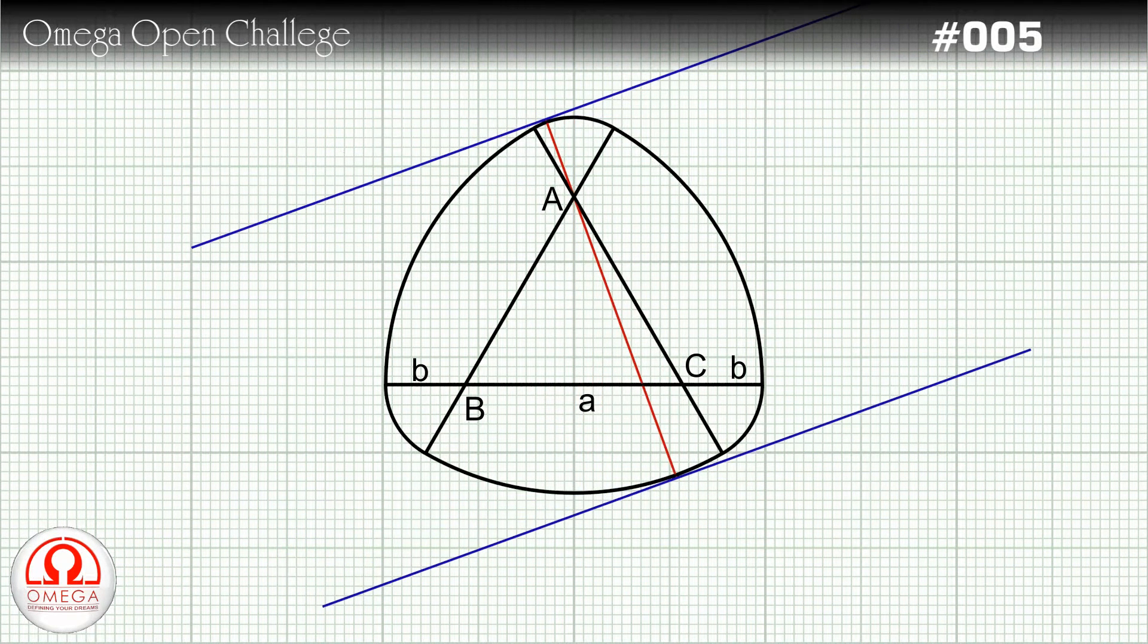If you change the orientation of the tangents, their distances from A do not change, so the distance between them remains the same.